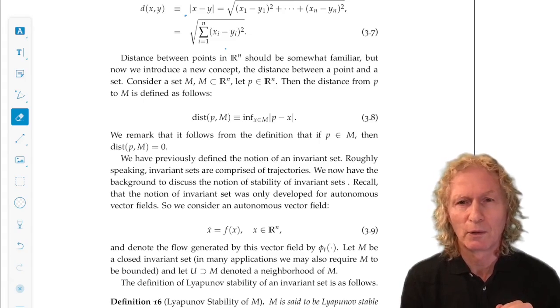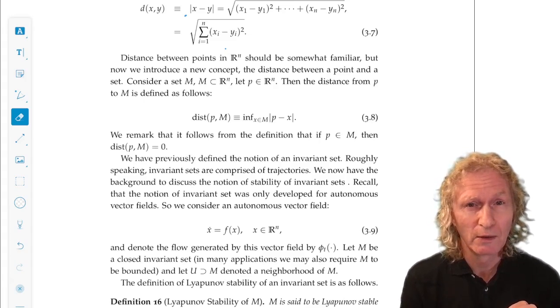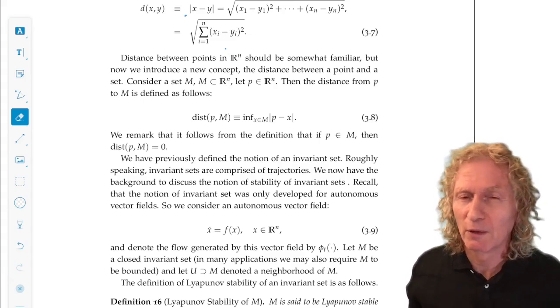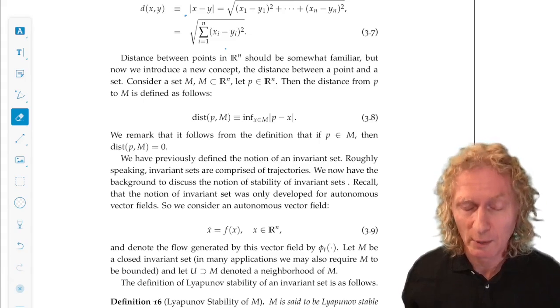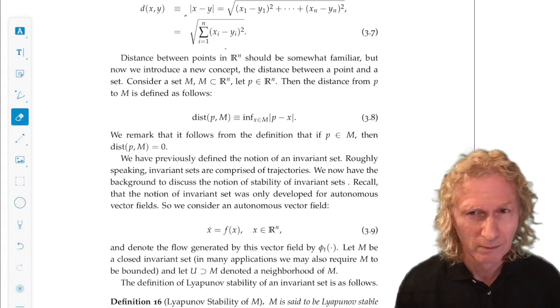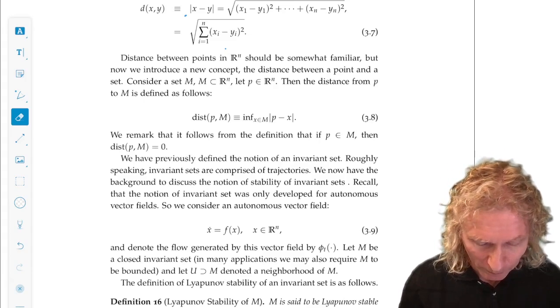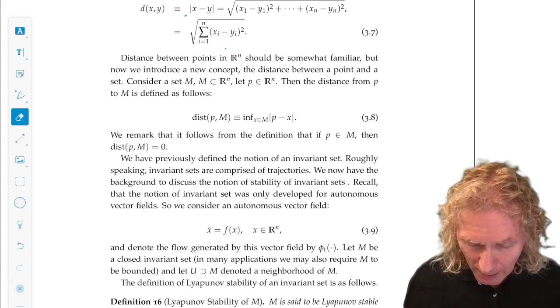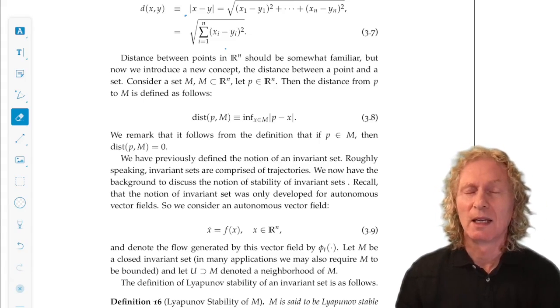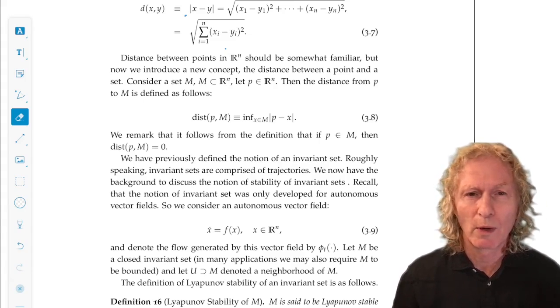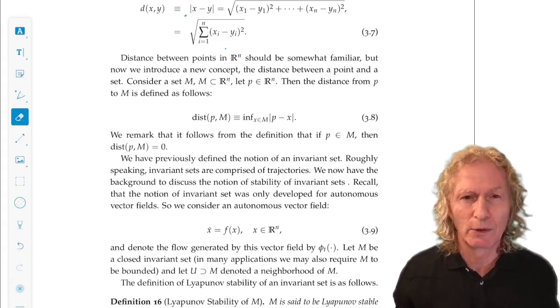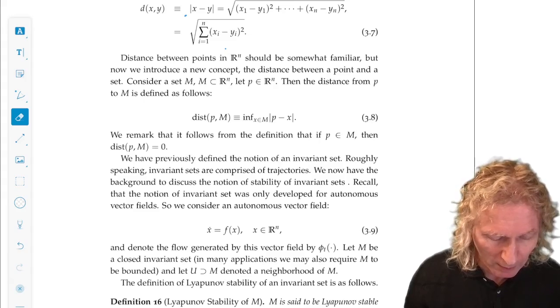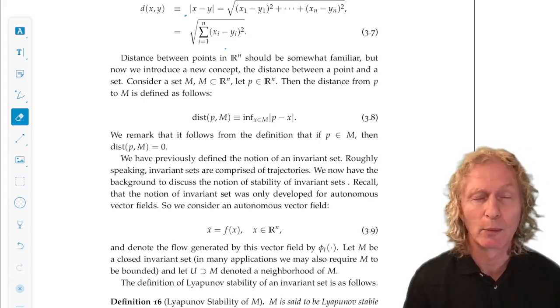We're talking about invariant sets for non-autonomous ODEs, and I'll leave that to you as a mystery for now. But I want to develop the idea for autonomous ODEs. So we have a flow for autonomous systems. And suppose let's let M be an invariant set, and I'm going to require it to be closed. I didn't require that in my general notion of an invariant set, but I'm going to now, and that just means that it contains all its boundary points.